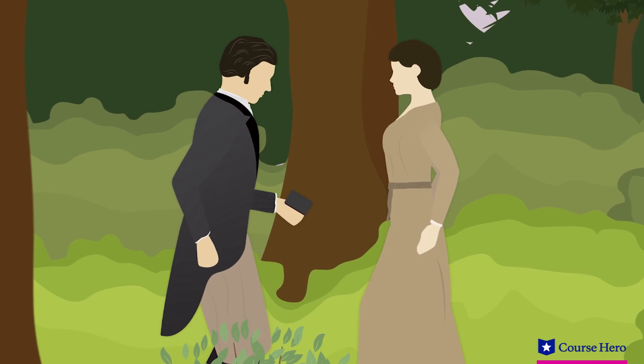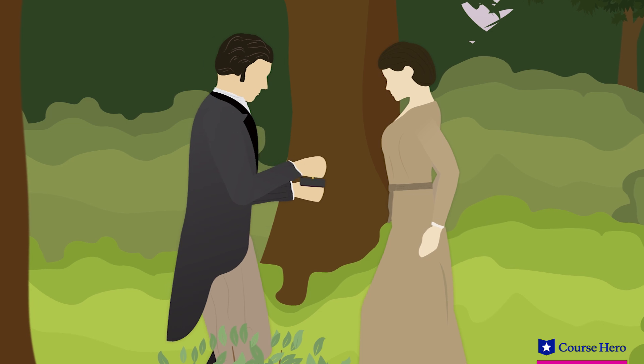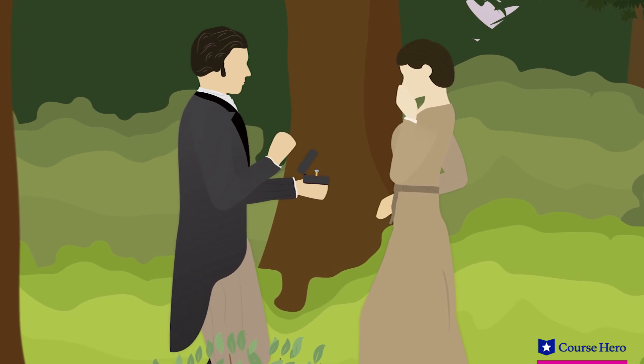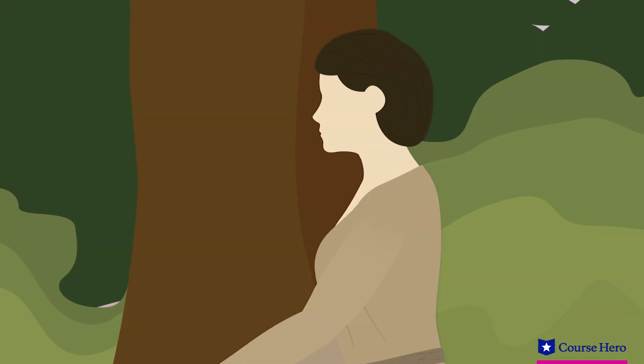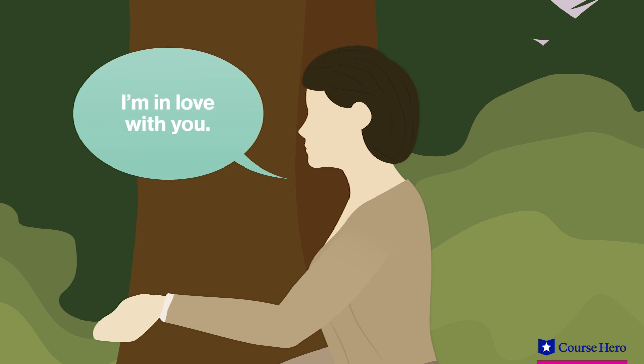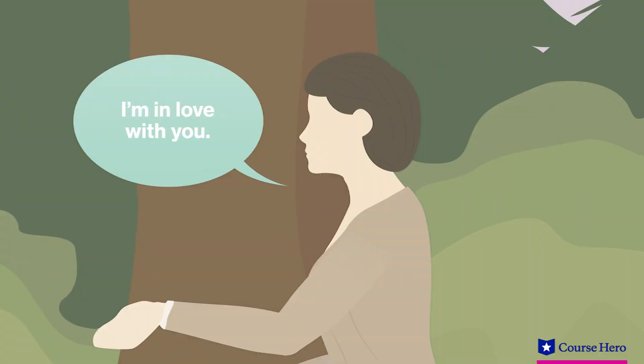In the end, Darcy and Elizabeth must overcome social class by disobeying the wish of Lady Catherine that Darcy not marry below him.